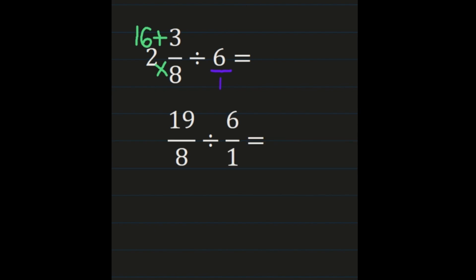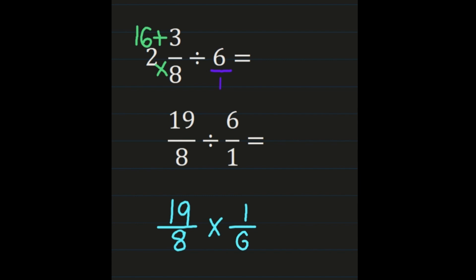Now we're set up to divide fractions: 19 eighths divided by 6 over 1. We can clearly see which one is our first fraction — 19 eighths remains exactly the same. Then our division sign turns into a multiplication sign, and we're multiplying by the reciprocal of 6 over 1, which is 1 sixth. Numerator times numerator: 19 times 1 is 19. Denominator times denominator: 8 times 6 is 48.